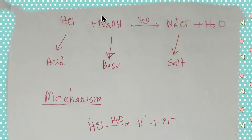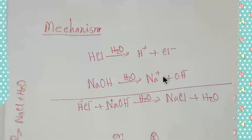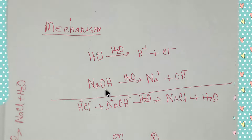Now I would like to show you in two steps the mechanism of this reaction. In aqueous solution, HCl produces a hydrogen ion and a chloride ion. On the other hand, sodium hydroxide produces a sodium ion and a hydroxyl ion.